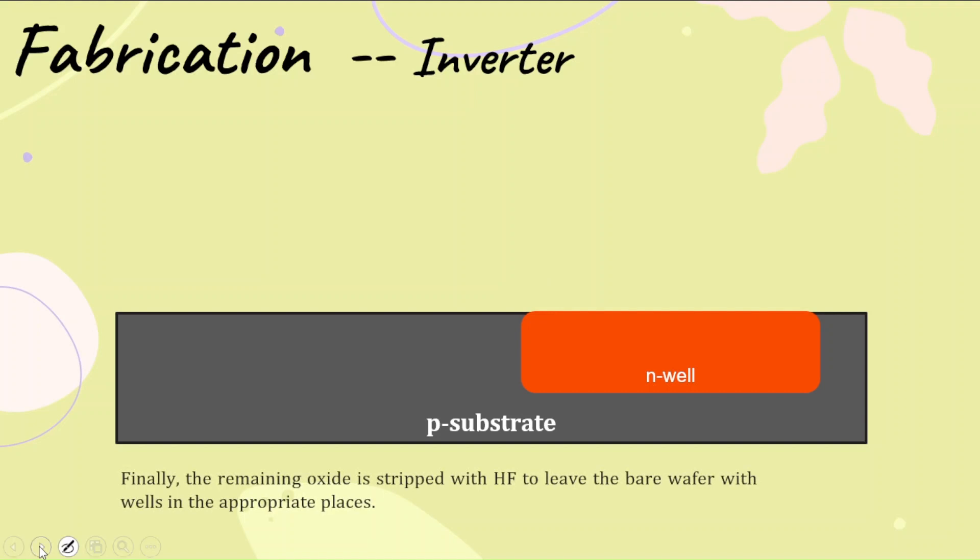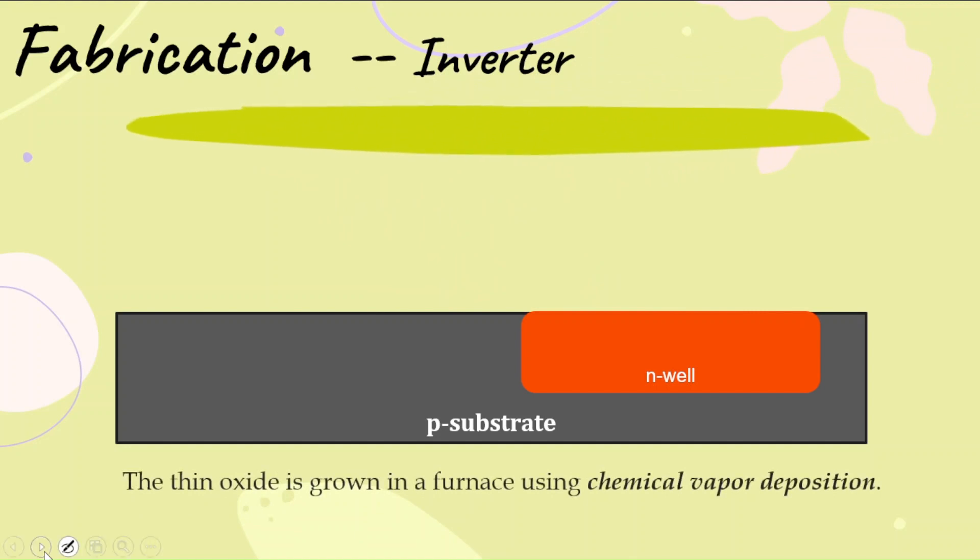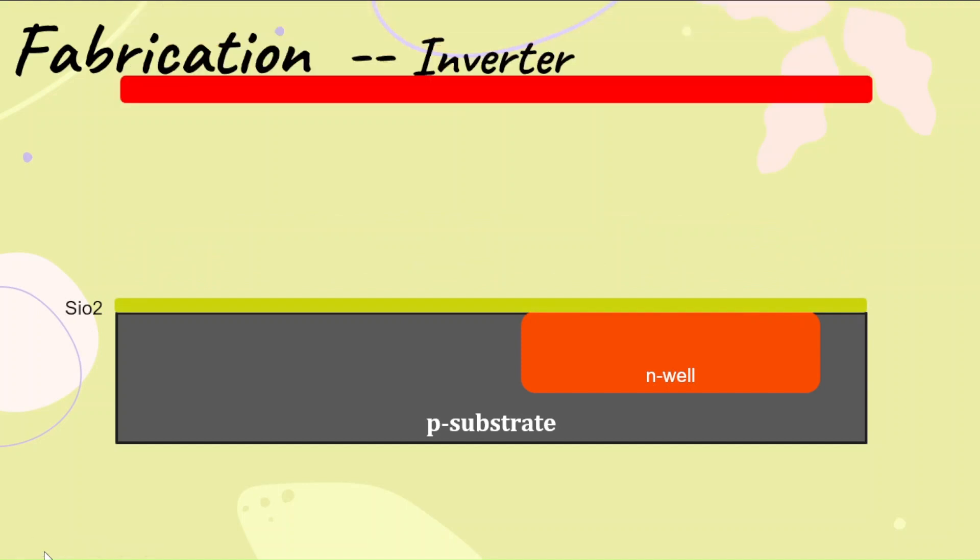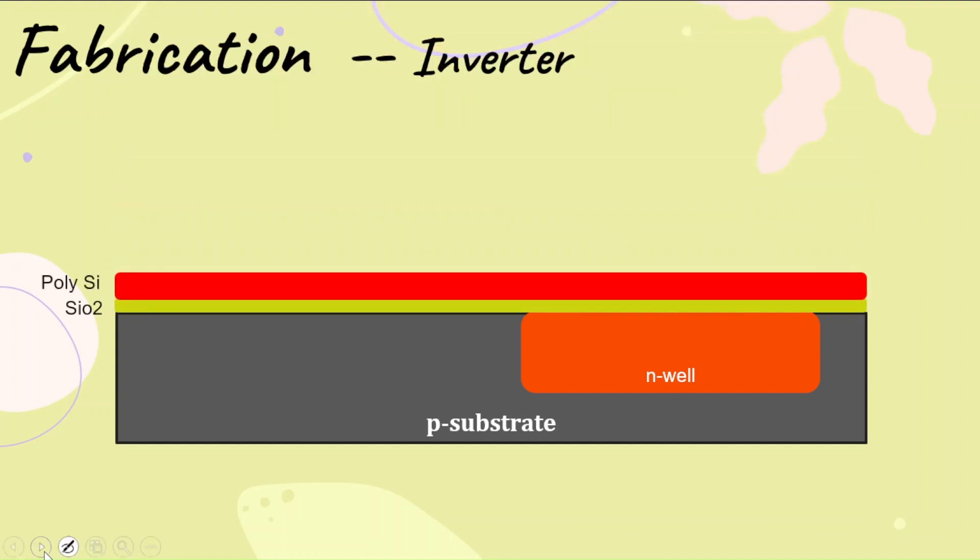In the next step, we remove the silicon dioxide using hydrofluoric acid so that we can place the next layers, which is formation of the gate. A thin layer of silicon dioxide is deposited over it, and then polysilicon is placed.